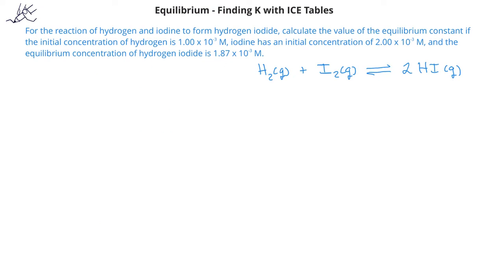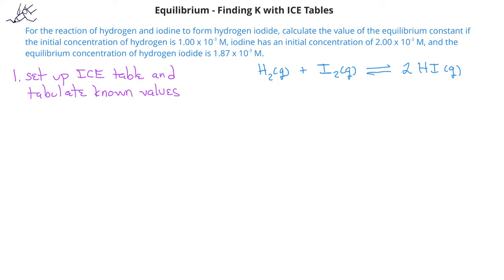Let's look at an example of how to use an ICE table to calculate the equilibrium constant for a system. In this problem, we're given the initial concentrations of hydrogen and iodine, and we're also given the equilibrium concentration of hydrogen iodide. We're asked to determine the value of the equilibrium constant. Since we only know one equilibrium concentration — that of the hydrogen iodide — we need to determine the equilibrium concentrations of the other two species, hydrogen and iodine. We begin by setting up the ICE table and tabulating the initial and equilibrium concentrations given to us.